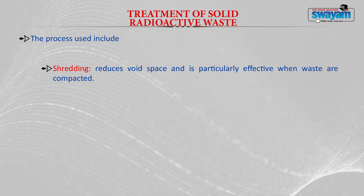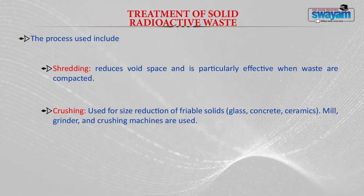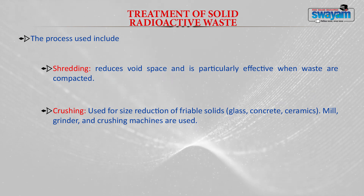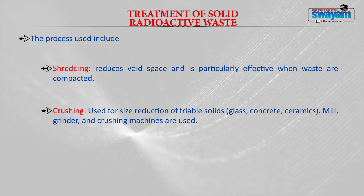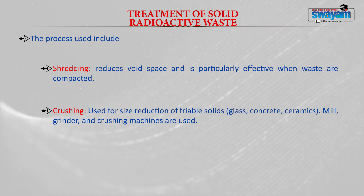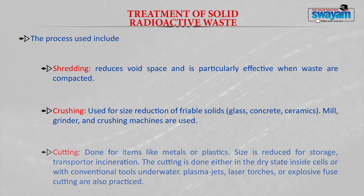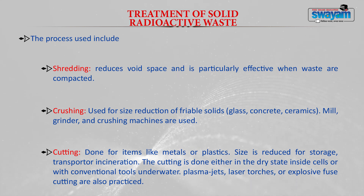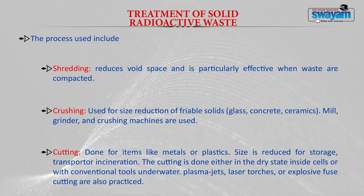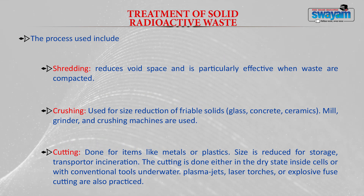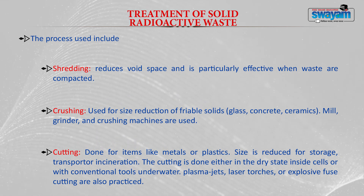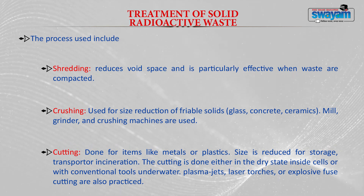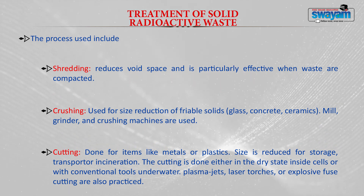Shredding reduces void space and is particularly effective when waste is compacted. Crushing is used for size reduction of friable solids like glass, concrete, and ceramics. Cutting is done for items like metals or plastics to reduce size for storage, transportation, or incineration. Cutting is performed in the dry state inside cells or with conventional tools under water; plasma jets, laser torches, or explosive fuse cutting are also practised.